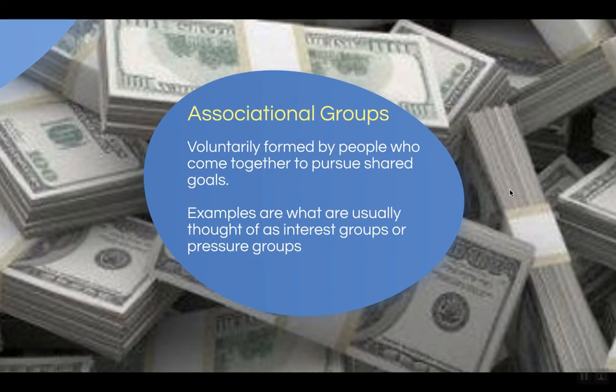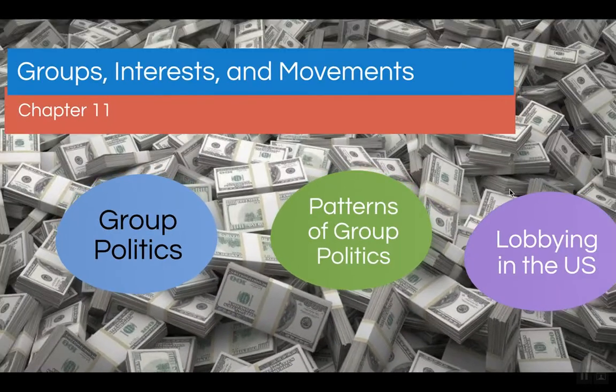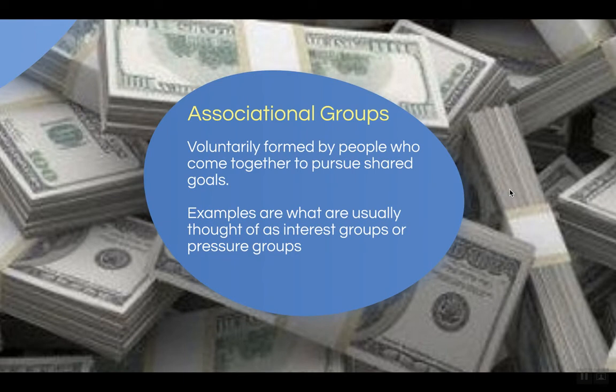Now let's talk about associational groups. Associational groups are voluntarily formed by people who come together to pursue shared goals. Some examples of what are usually thought of as interest or pressure groups include things like the National Rifle Association or the American Medical Association. These are groups that people can join, committing their time and money, all in the hopes of securing some type of goal.